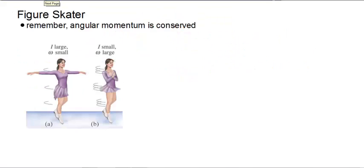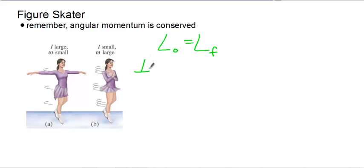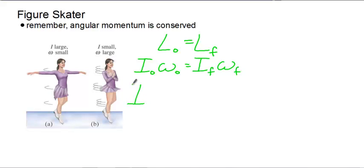Let's revisit the figure skater problem — this is a very common AP problem. Thinking back to conservation of angular momentum: L₀ = L_F. She has some initial angular momentum and initial angular speed. Then she has final angular momentum and final angular speed. Originally she has a large I and a small omega; after she pulls her arms in, it's a small I and a large omega. Of course, omega is larger after pulling her arms in.